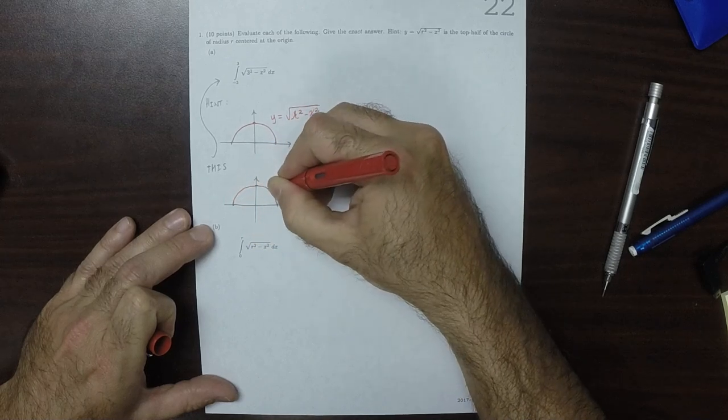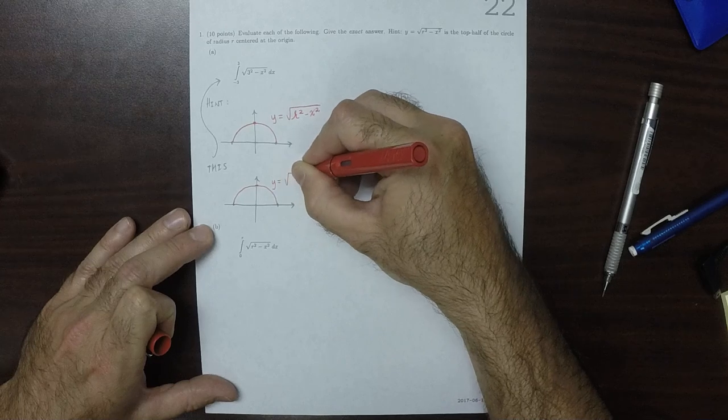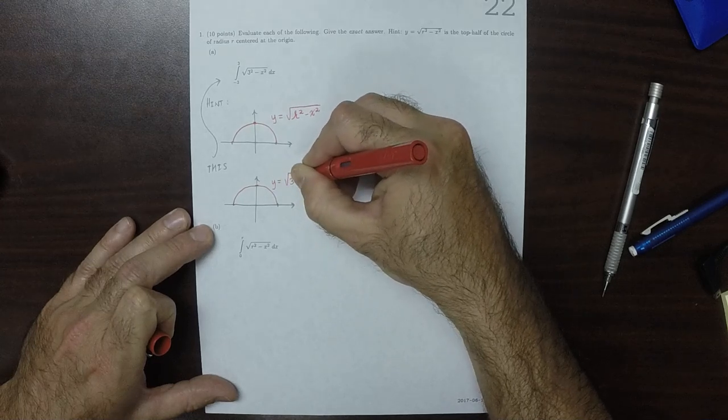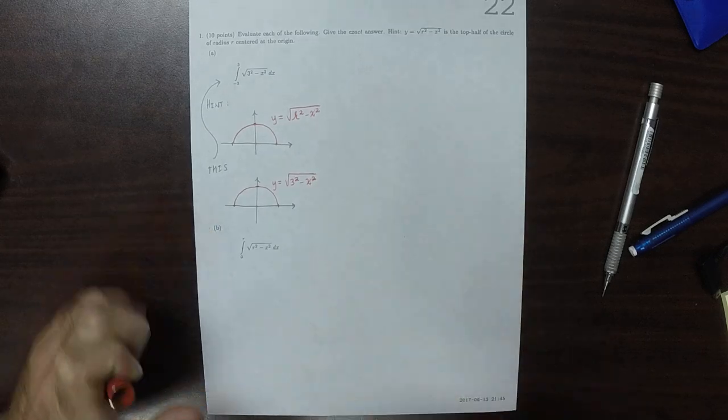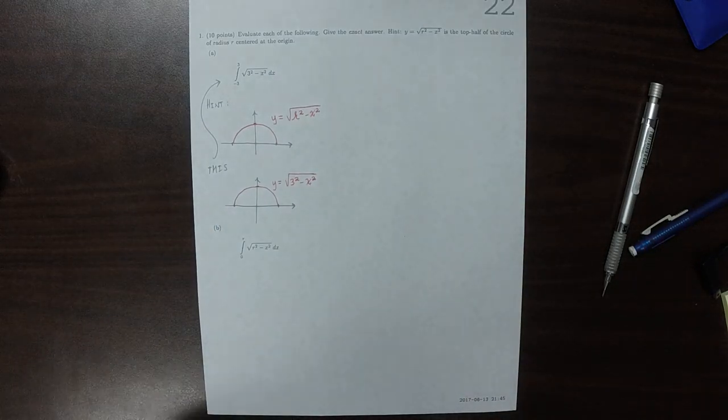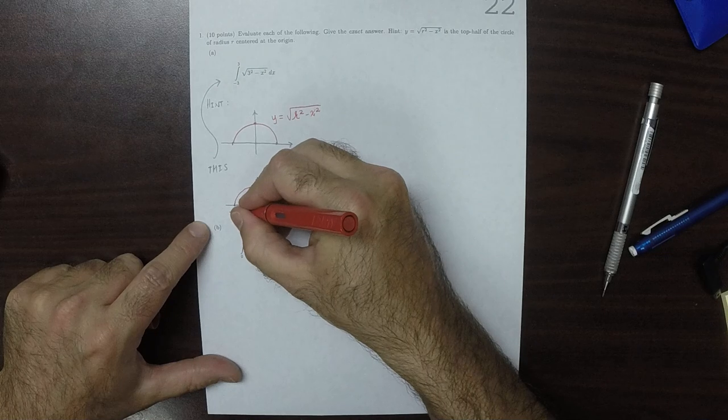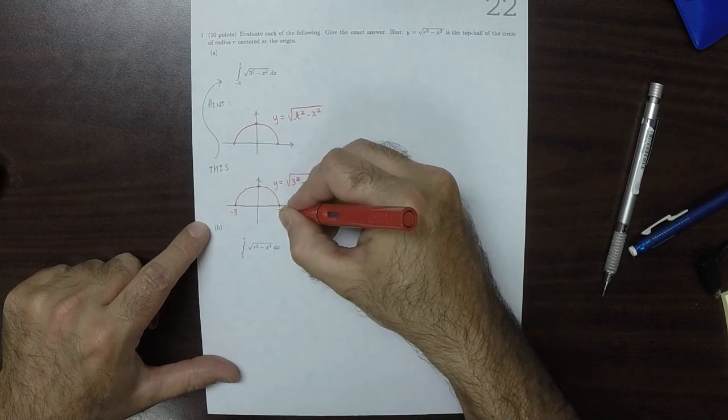this, so this is y is the square root of 3 squared minus x squared, and we're asking to integrate from negative 3 to 3.